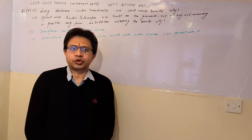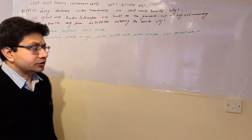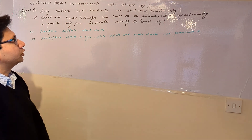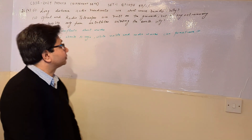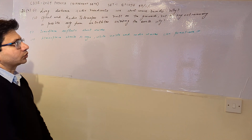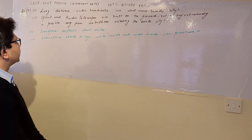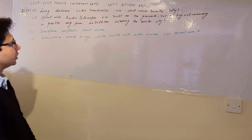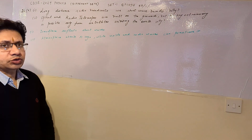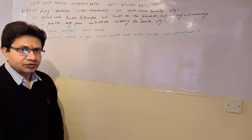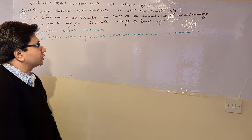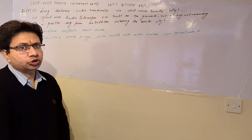Hello students, hope you are doing well. The questions are: first, why do long distance radio broadcasts use shortwave bands? And second, optical and radio telescopes are built on the ground but x-ray astronomy is possible only from satellites orbiting the earth — why? These questions are based on the topic of electromagnetic waves.